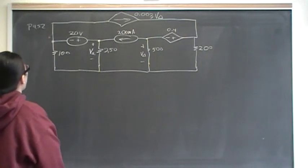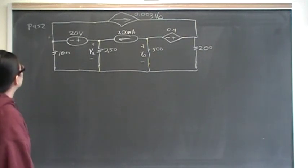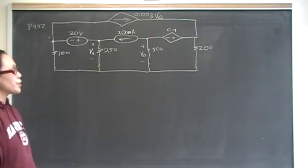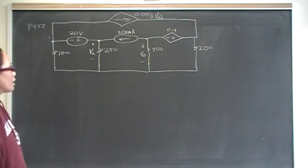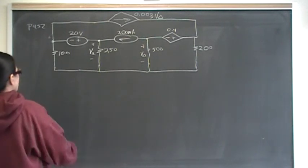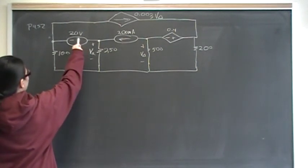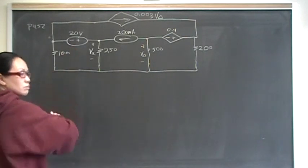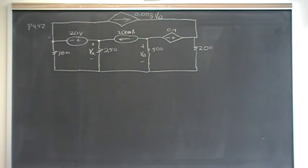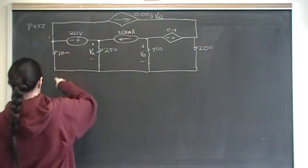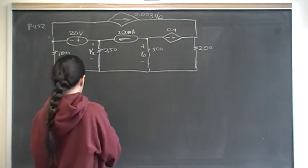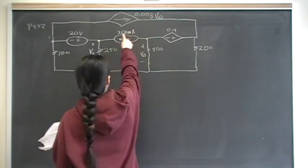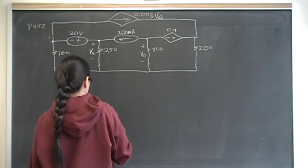Hey you guys. So this is problem number 52 from chapter 4. We have a circuit and it looks like this. Over here we have a 20 volt independent voltage source, a 100 ohm resistor, a 200 ohm resistor, and a 200 milliamp independent current source.